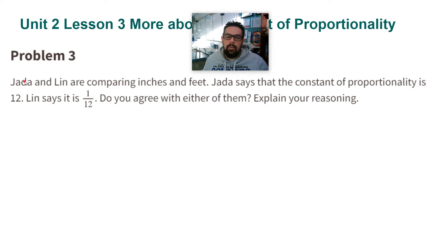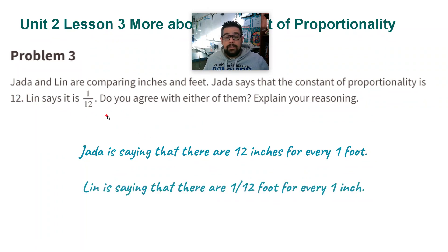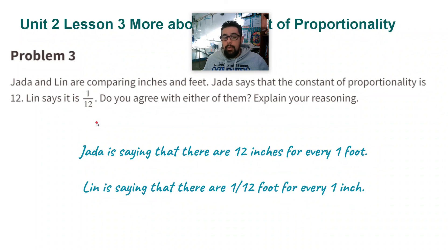But if I know the number of inches and I want to calculate the number of feet, I'm going to use 1 over 12. So Jada is saying that there are 12 inches for every foot — if you know the number of feet and want to find the number of inches, you multiply by 12. Lynn is saying that there are 1/12 feet for every inch — if you know the number of inches and want to find the number of feet, you multiply by 1/12. They are both correct, but they are talking about different things when using the constant.